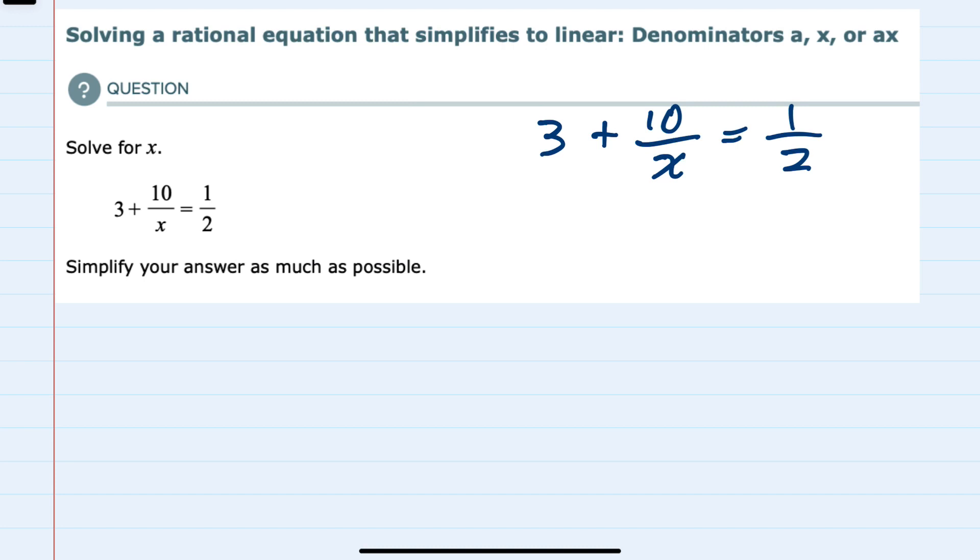So we're solving for X, and we have these fractions. And the easiest way to get rid of fractions and make this an easier problem to solve is to first find the lowest common denominator.